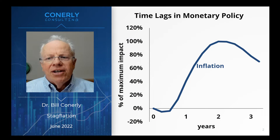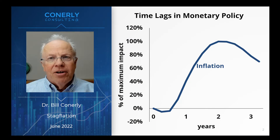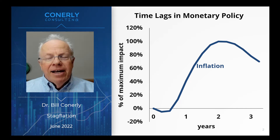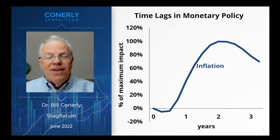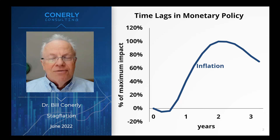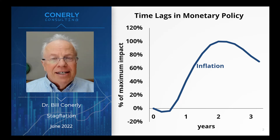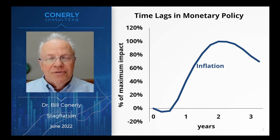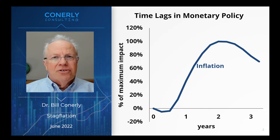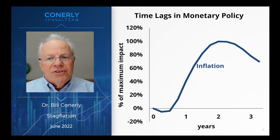The maximum effect of monetary policy on inflation happens after about two years, plus or minus a little bit. And at first, not much happens. In fact, at first we have a perverse direction — when the Fed is trying to bring inflation down, they actually push it up. Higher interest rates increase company costs, and some companies will push prices up to keep their profit margin going. That eventually is reversed. Tighter monetary policy does eventually slow down inflation, but not in the first six months, and a year in, not much has happened.